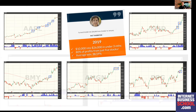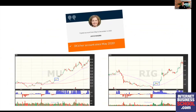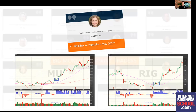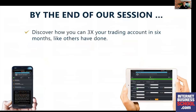Pat did even better the following year, turning three thousand eight hundred dollars into thirty-three thousand in nine months — all using the same technique, the same kind of trades. Joyce also tripled her account from May to December. This is the community of what we call Big Money Footprint traders. By the end of this session you'll discover how you can be one of those people who has 3x'd their account in a short space of time, just like others have done.